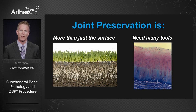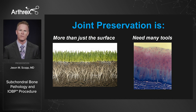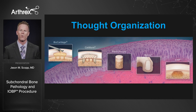What is joint preservation? When we think about managing the joint, we have to think in terms of what tools we have to manage that joint as an organ. Just like a lawn where there is more than just the surface, so too is the cartilage layer — we have to think from the surface all the way down to the subchondral bone. We have to organize our thoughts when beginning to think of the joint as an organ.